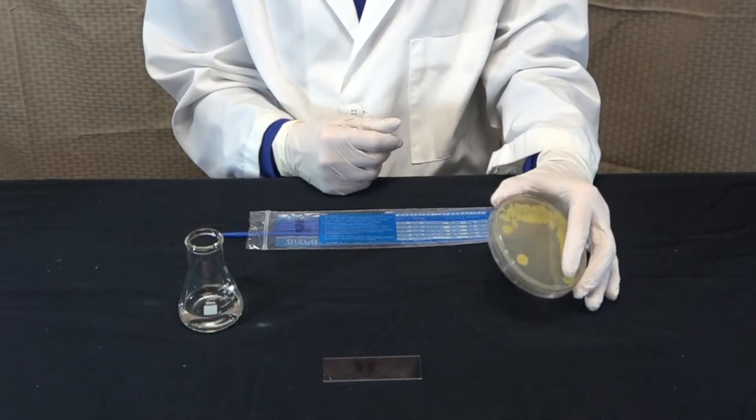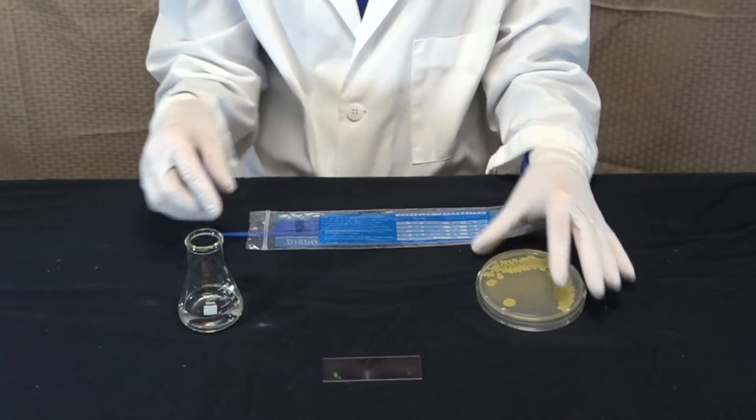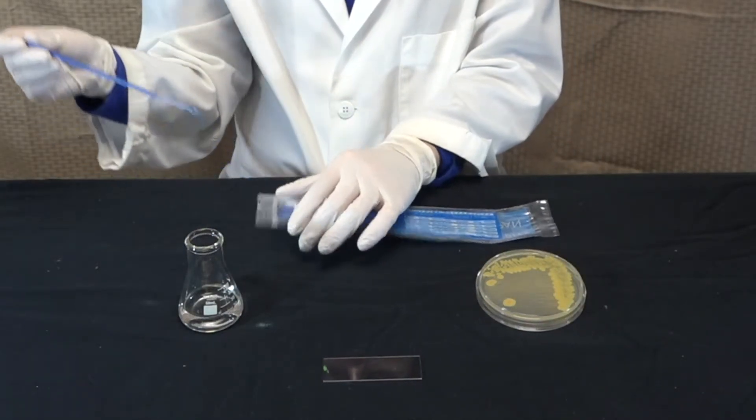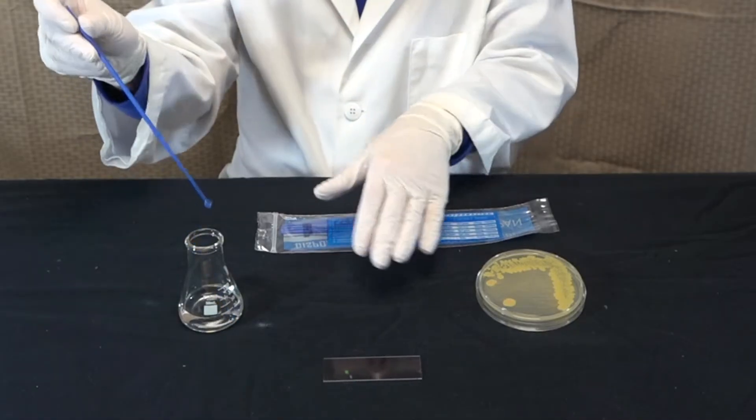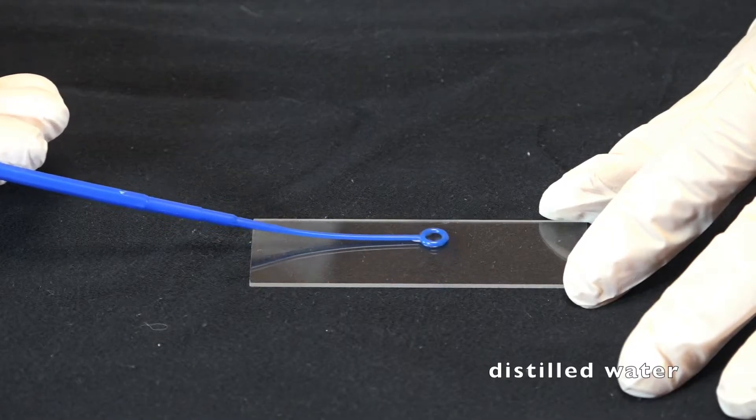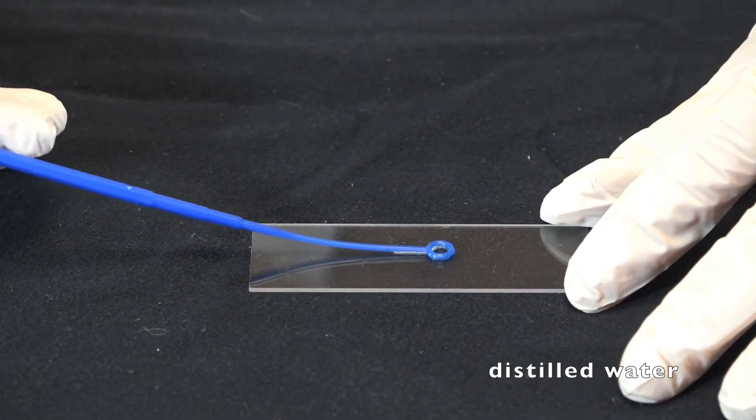To prepare a slide from a colony of bacteria, the bacteria will not spread well on a glass slide. So I'm going to use a sterile loop to add a drop of distilled water to the slide and spread it in a circle about one centimeter radius.